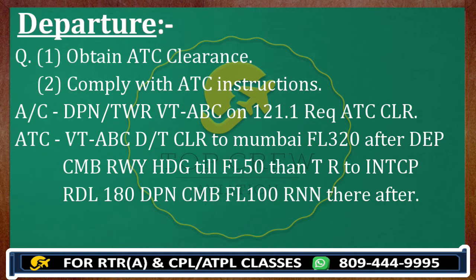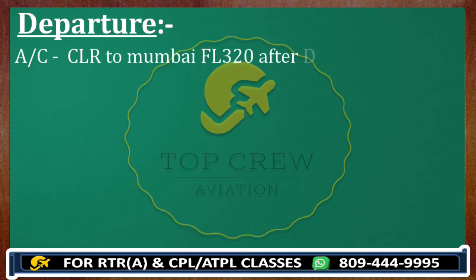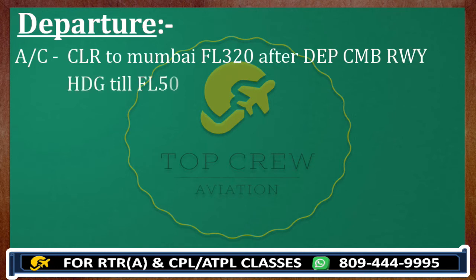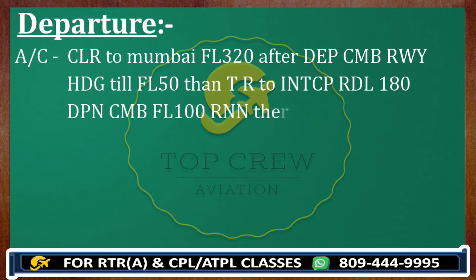You need to read back. You are going to read back as follows: Clear to Mumbai, flight level 320. After departure, climb runway heading till flight level 50. Then turn right to intercept radial 180, Delhi Papa November. Climb flight level 100, resume normal navigation thereafter. Victor Tango Foxtrot Bravo Charlie.